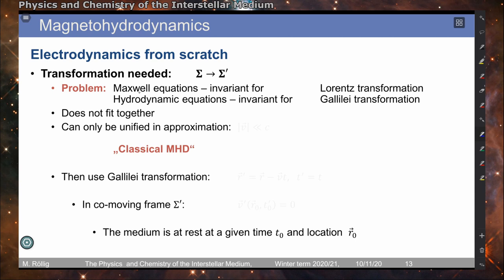We now need to transform from sigma to sigma-prime. Here we have the problem that our Maxwell equations are invariant for Lorentz transformations, while the hydrodynamic equations are invariant for Galilei transformations — so these do not fit together. We can only unify these two characteristics by assuming that we are looking at fluid velocities much smaller than the speed of light, so the two transformations are approximately the same. This is called the classical MHD case, and we can then use the Galilei transformation.